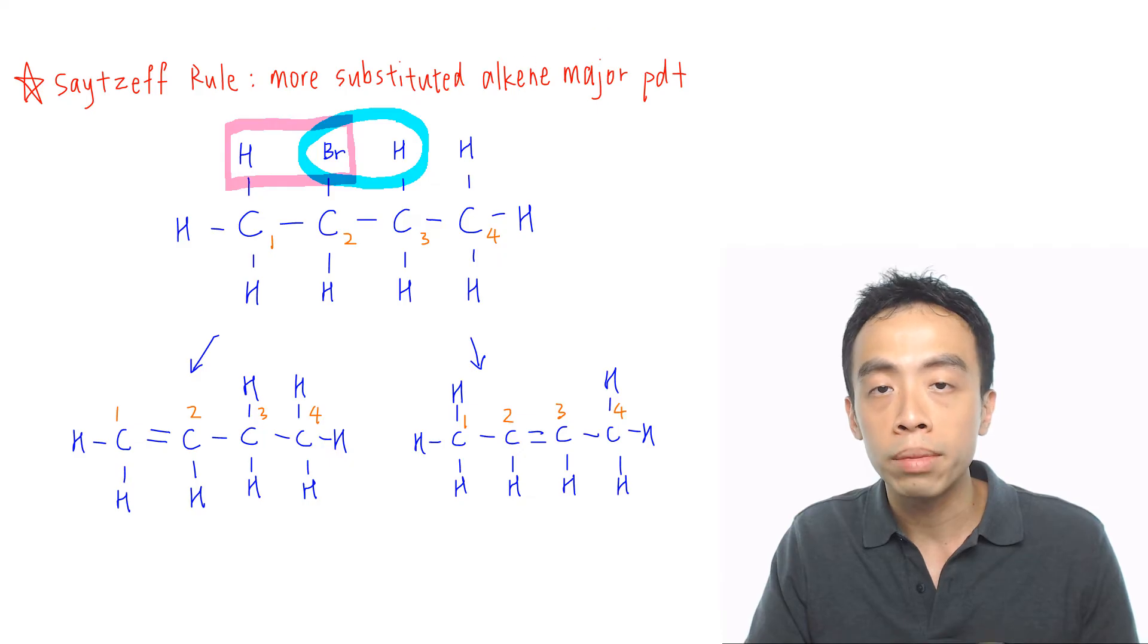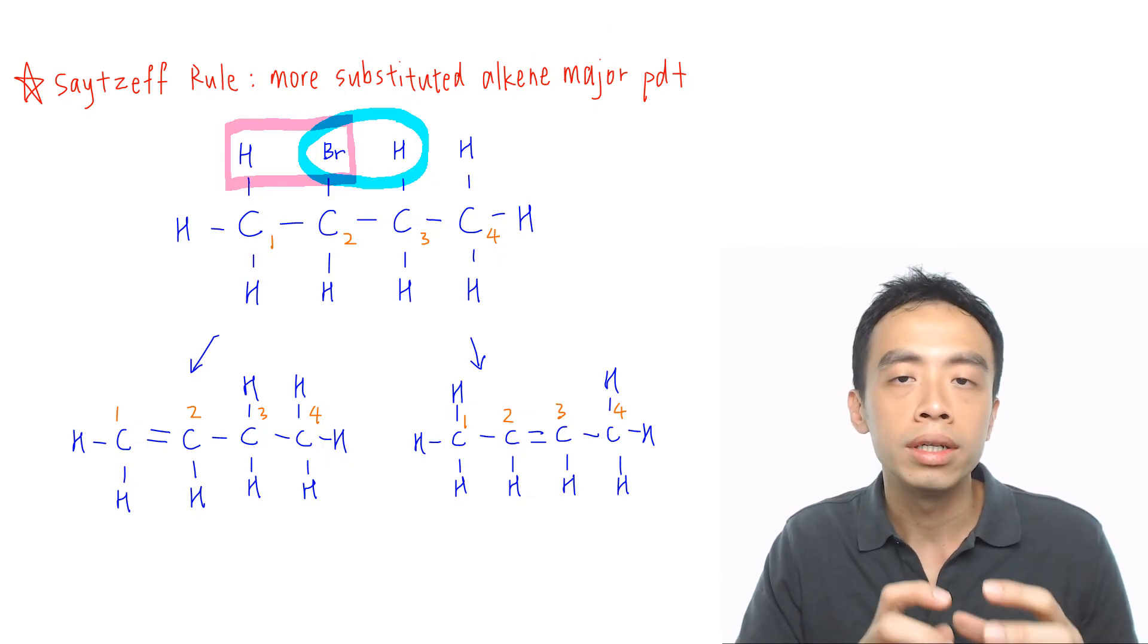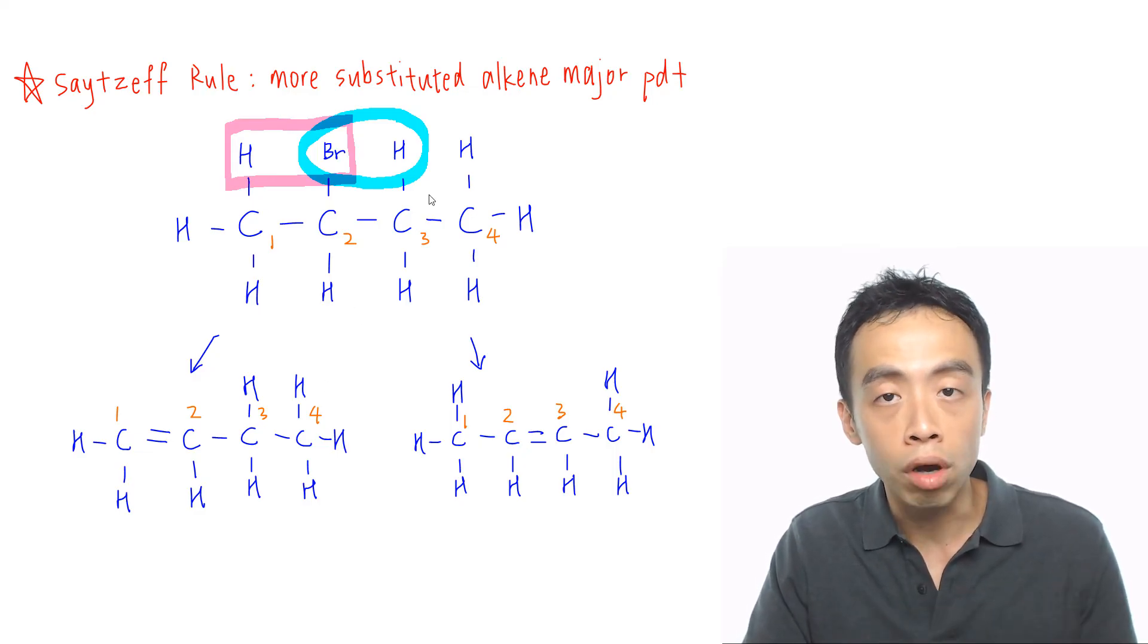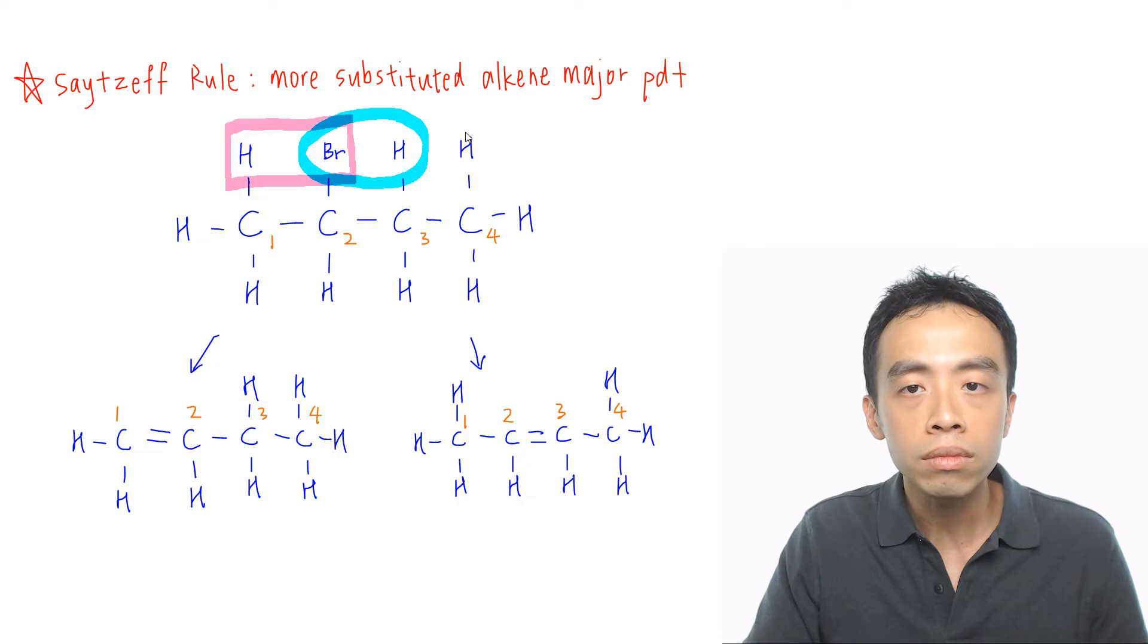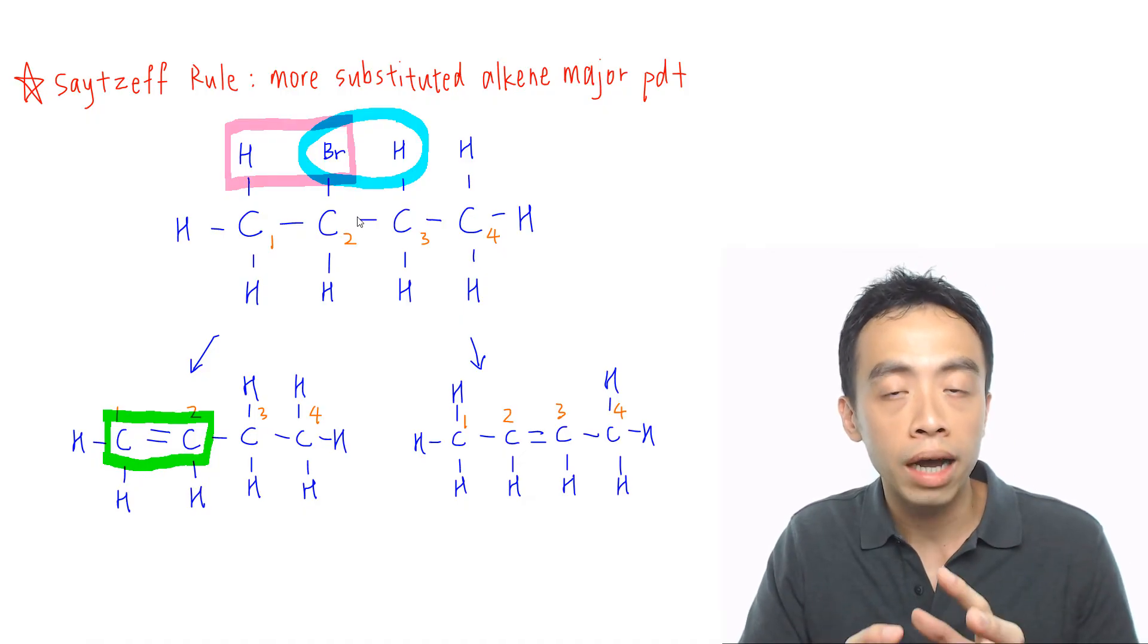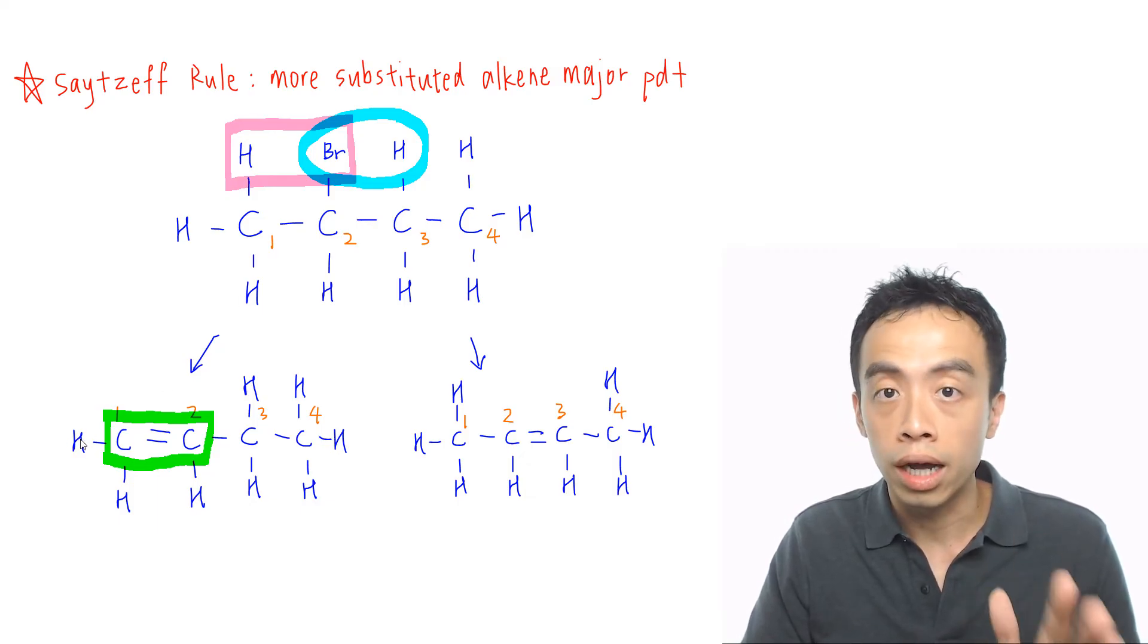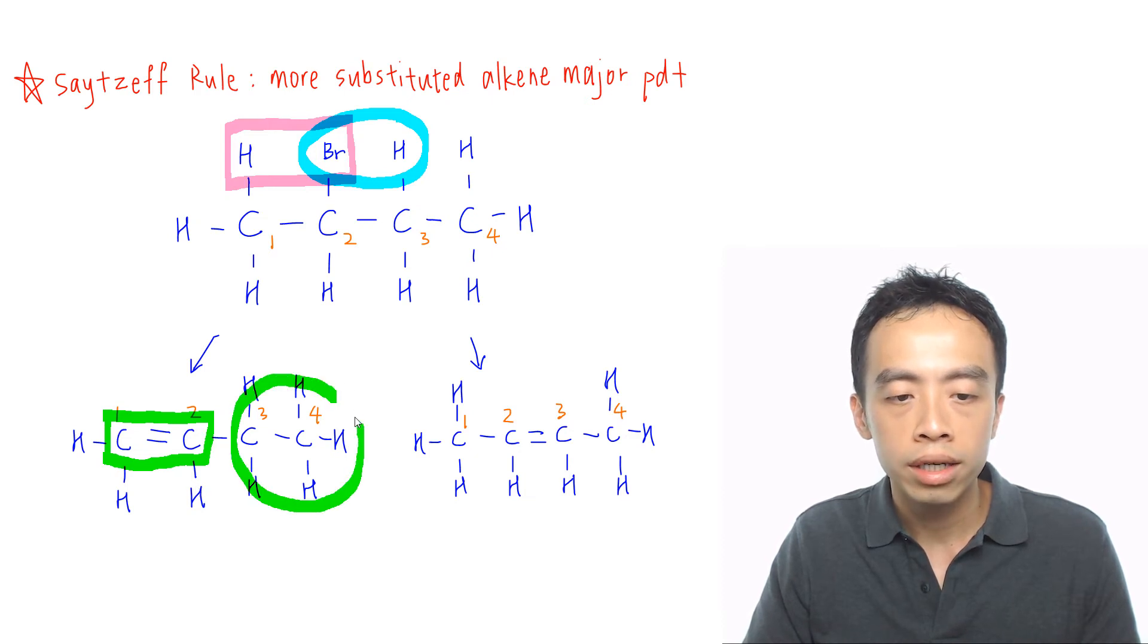So how do we determine the degree of substitution? It's fairly straightforward. We just box up our alkene and we're going to count the number of non-hydrogen groups that's attached to my alkene. So if we look at the first compound on my left-hand side, I just box up my alkene and I consider the number of R groups attached to my alkene. So this is a hydrogen, it's not an R group. This is a hydrogen, this is a hydrogen. So we have one R group here.